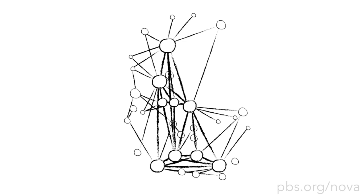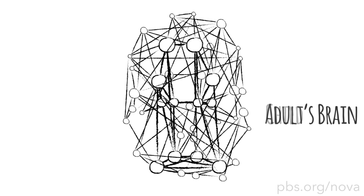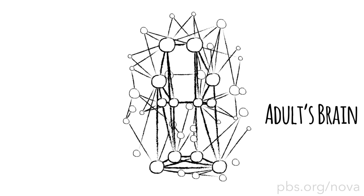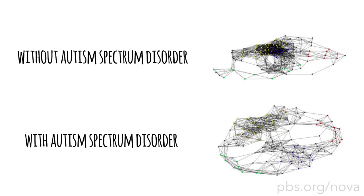We also know that children's brains start off looking randomly connected, but as they age and their brains develop, connections are lost and it becomes more small world-like and structured. On the other hand, people with neurological disorders like autism have brains that look like big worlds, missing those key connections between clusters.